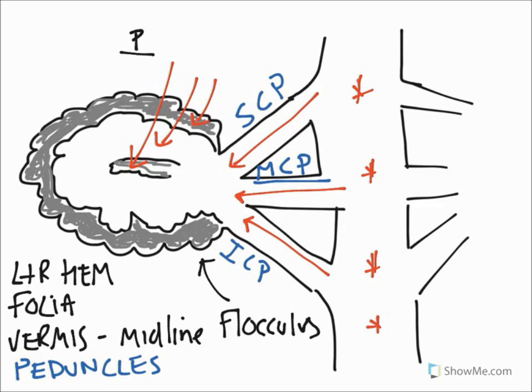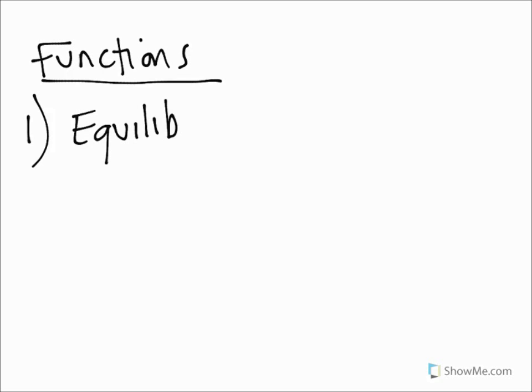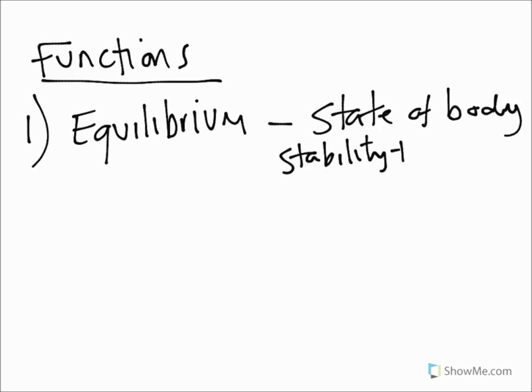So this is our basic anatomy and now we're going to talk about the functions. A very brief overview of what the cerebellum does. Number one, and this is really in order of sophistication as well, we have a role in what we call equilibrium and this really is the state of the body regarding stability and balance.